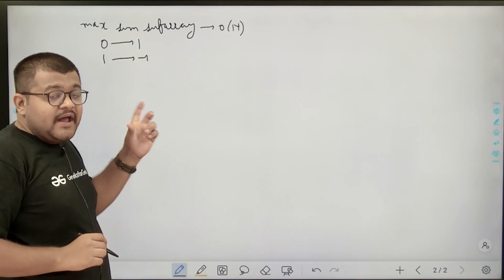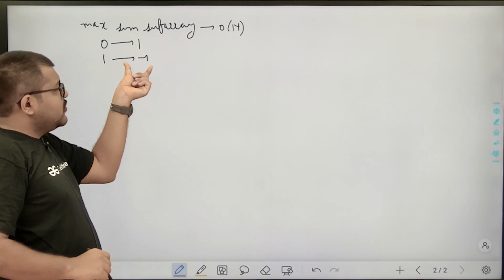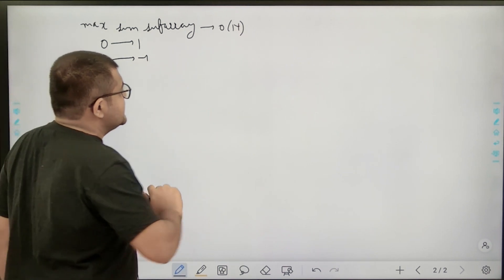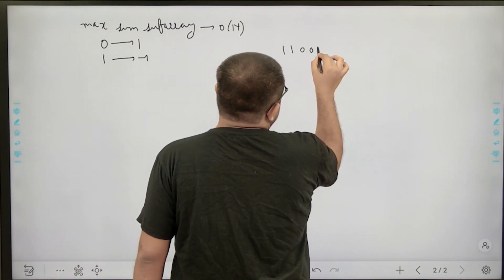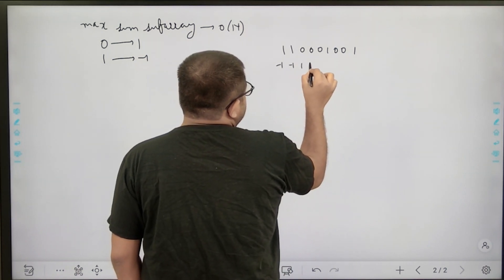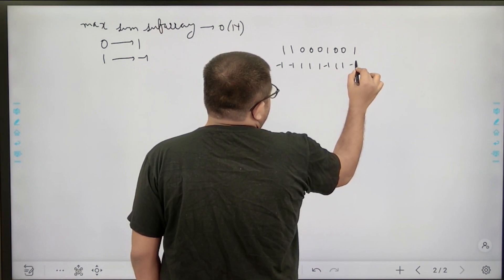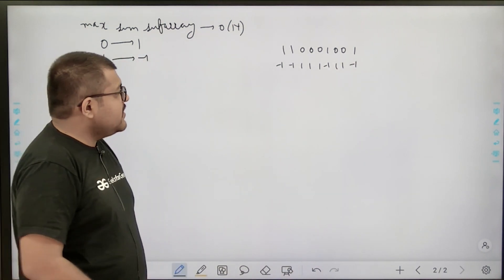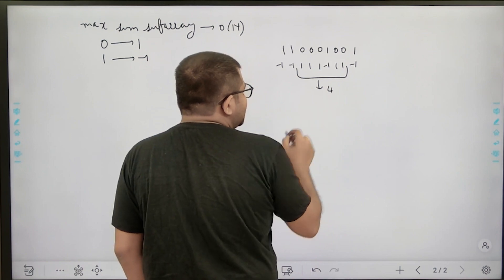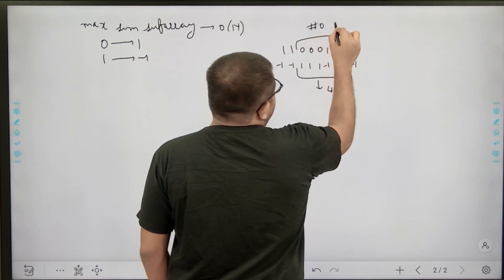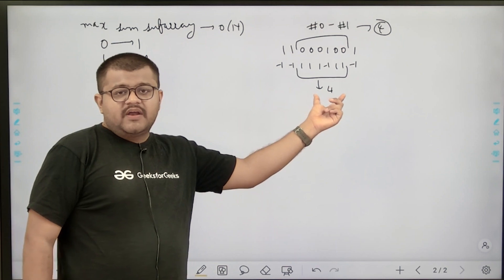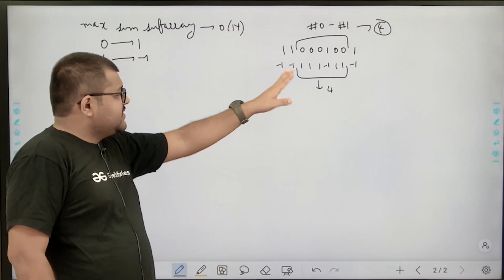Yes! I can take all zeros as +1 and all ones as -1 in my modified array. Then the maximum sum sub-array of this transformed array will give the sub-array where (number of zeros - number of ones) is maximum. For example, converting ones to -1 and zeros to +1, the maximum sum sub-array with sum 4 represents a sub-array with 4 more zeros than ones.